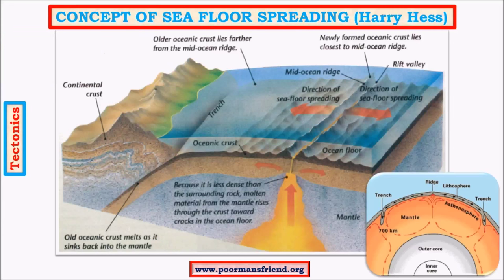How is sea floor spreading different from convection current theory? In convection current theory we see only the movement of lithospheric plates. Sea floor spreading is an extension of convection current theory with a few additions — it also includes the movement of rocks and volcanic magma on the surface of the sea floor, and the way the sea floor spreads with continuous emissions of magma. The rising limbs give rise to stress, creating a weak zone where a volcanic vent forms, through which huge volcanic outpourings occur.